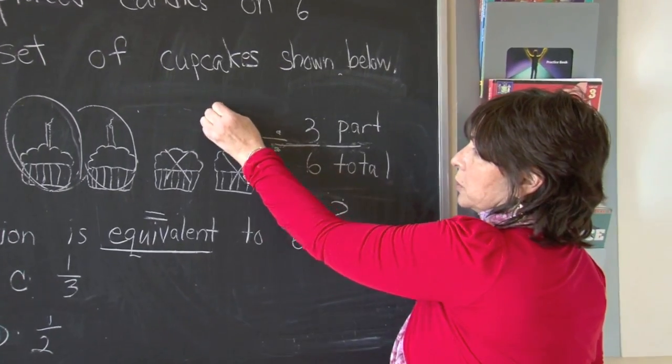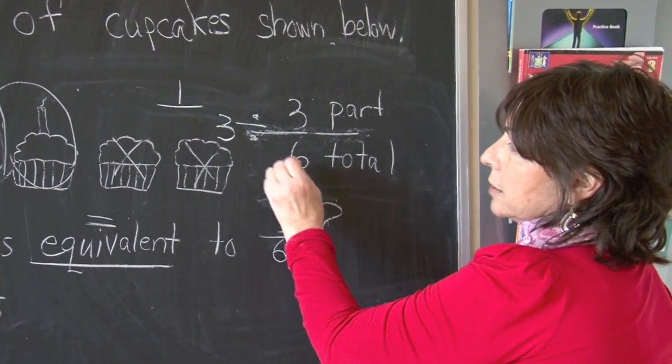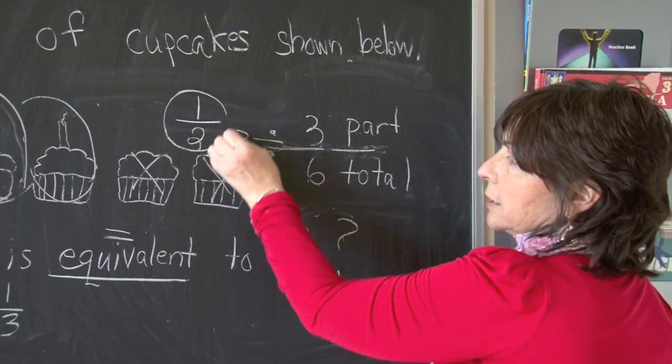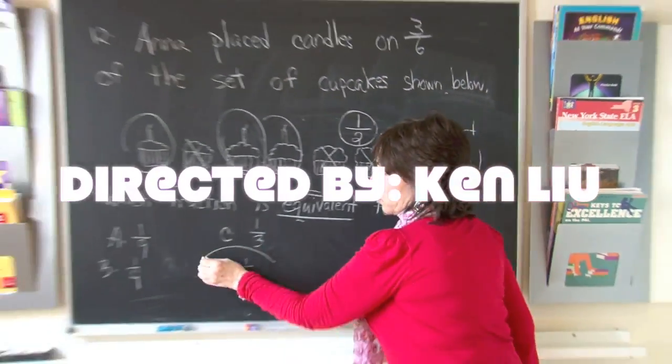Three divided by three equals one. Six divided by three equals two. The correct answer therefore is D, one-half.